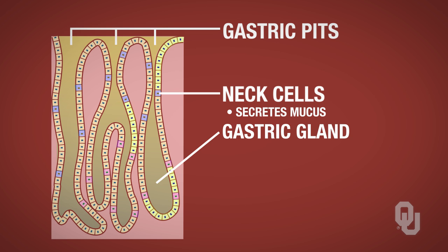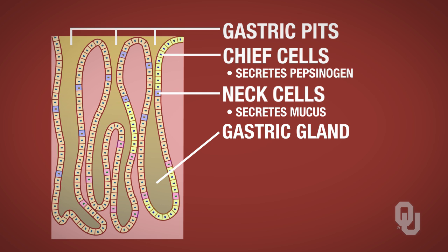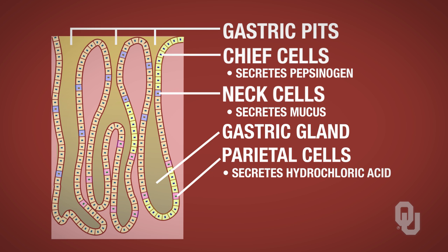The gastric glands contain three different cell types. The chief cells secrete pepsinogen, which is a pepsin precursor. Pepsin is a protease enzyme that breaks down protein. Parietal cells secrete hydrochloric acid and also something called intrinsic factor. Intrinsic factor is really important in the absorption of vitamin B12, and we'll come back to that later.